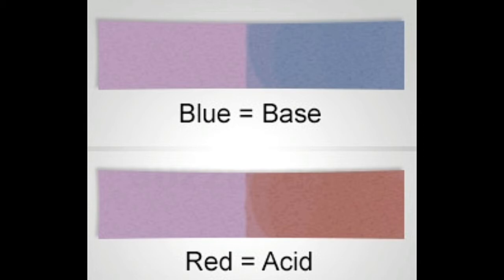The litmus test is a test used to identify and distinguish acidic and basic substances. It is one of the first tests taught to a chemistry student, and is the easiest to perform. Here are some helpful tips on how to test acids and bases using the litmus paper test.